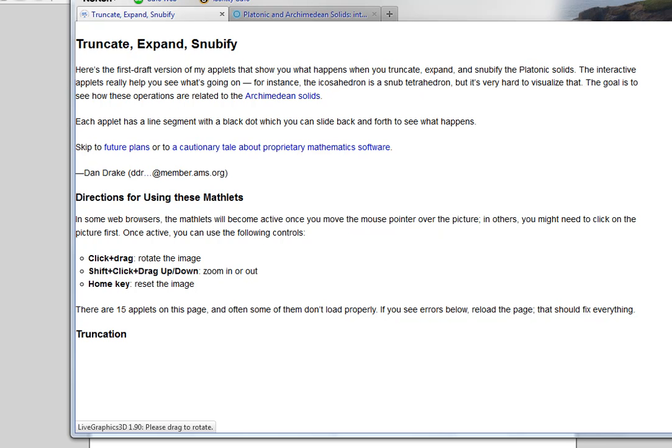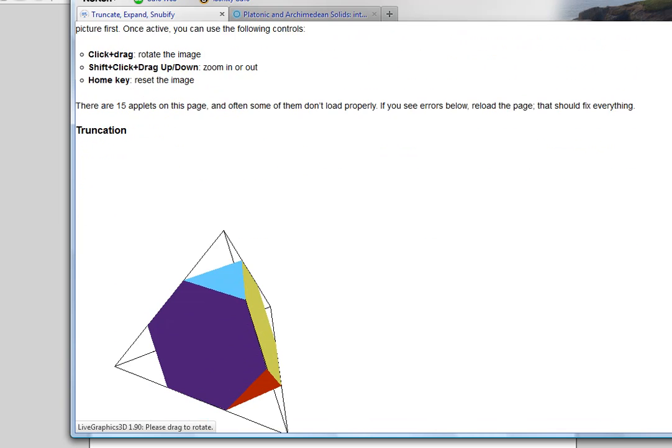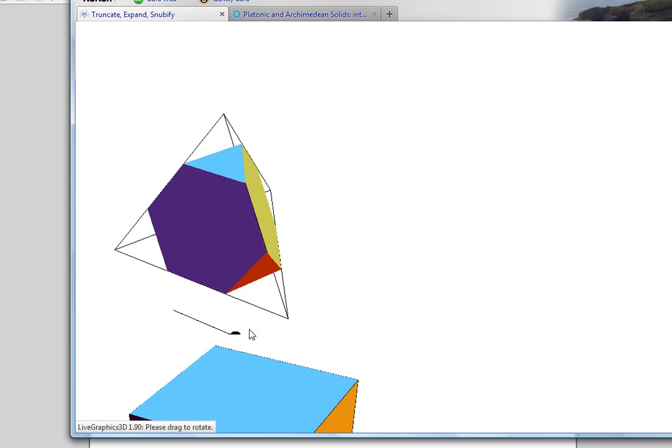We do not have a website that allows us to truncate the icosododecahedron, but we will use this website to remind ourselves what truncation means. Here we have the tetrahedron, and this is the truncation process, cutting off the corners.